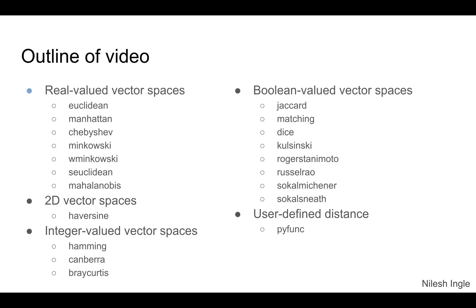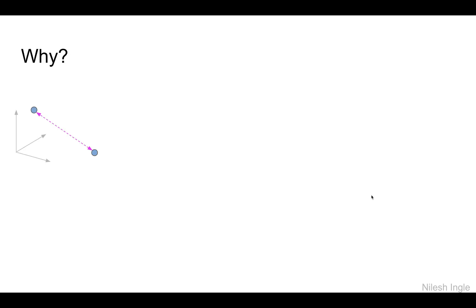The video will be divided into two or maybe three parts to cover all these distances. We have some real value, integer, boolean, and also user-defined distances. We need to measure distances because we are trying to find the similarity between two sets of data, and the most familiar distance that we know about is the Euclidean distance.